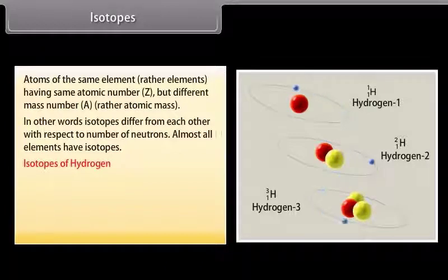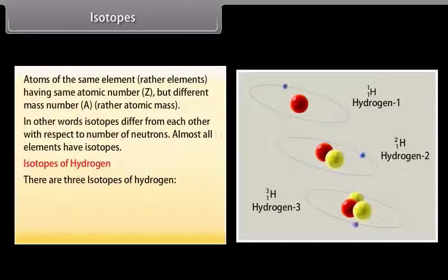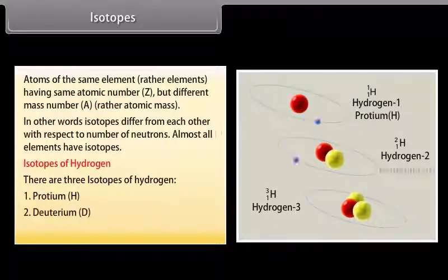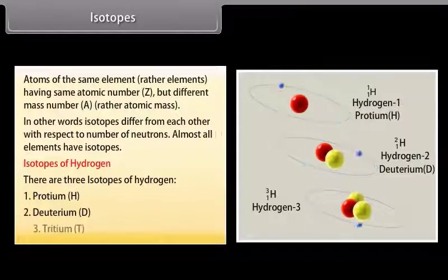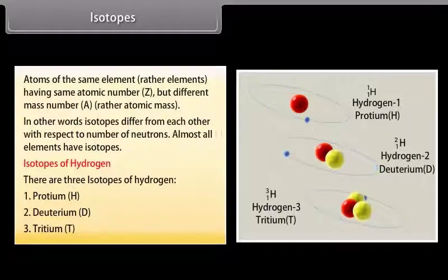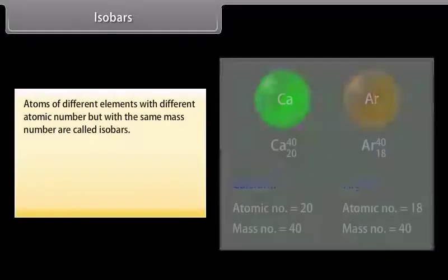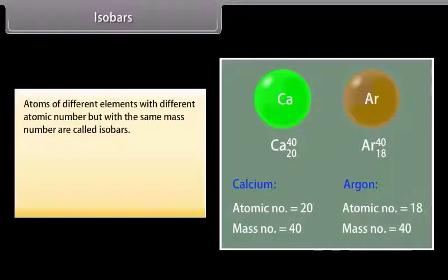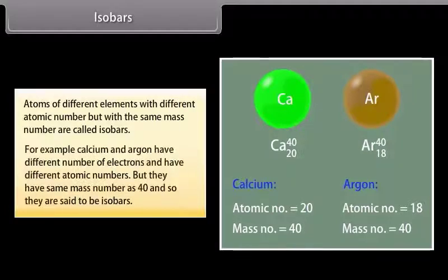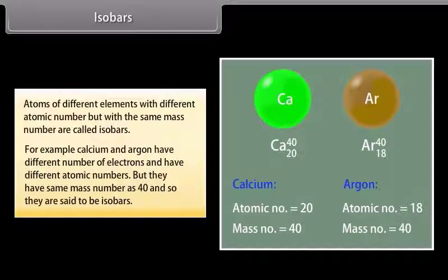Isotopes of hydrogen: There are three isotopes of hydrogen — 1. Protium, 2. Deuterium, 3. Tritium. Isobars: Atoms of different elements with different atomic number but with the same mass number are called isobars. For example, calcium and argon have different numbers of electrons and different atomic numbers, but they have the same mass number of 40 and so they are said to be isobars.